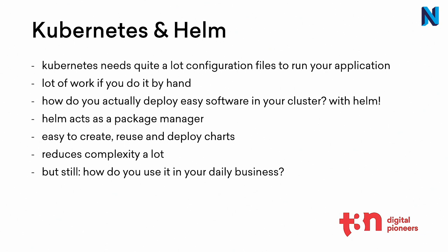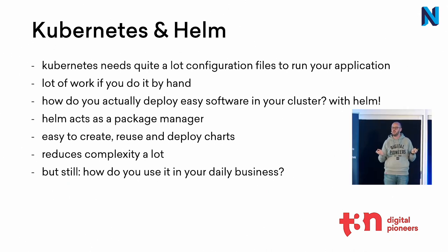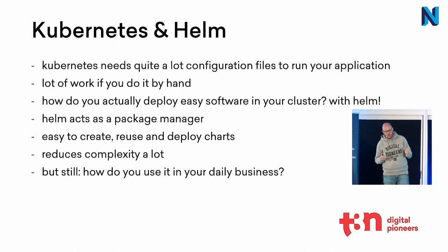When you start doing it you ask yourself how do we actually deploy something in the cluster, and then you find Helm. Helm is a package manager also made by the Kubernetes team. It provides so-called charts — you define an application as a chart and this chart will generate all the Kubernetes files you need. You have a values YAML file where you can define settings like database name or whatever. It reduces complexity a lot — you just use a CLI tool and say 'helm install neos' and you have a running Neos application in your Kubernetes. But still the question is how do you use it in your daily business?